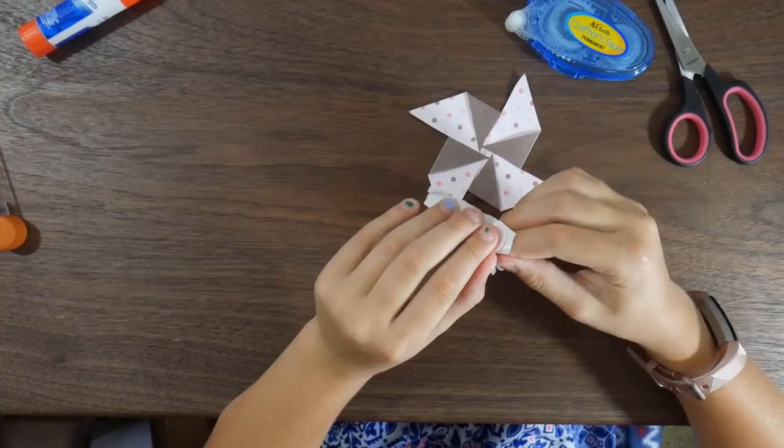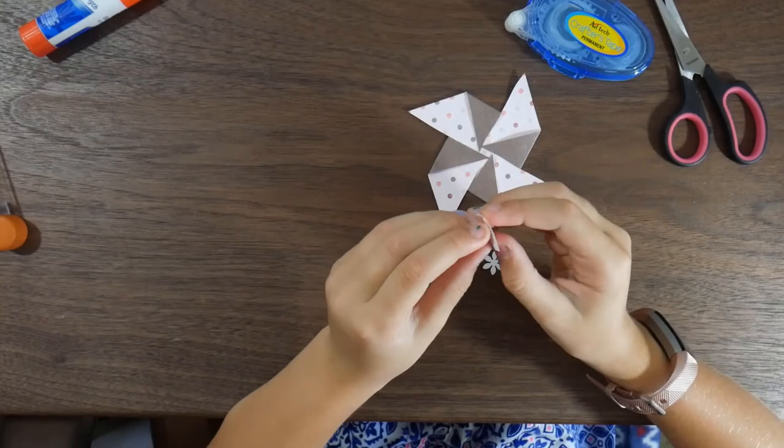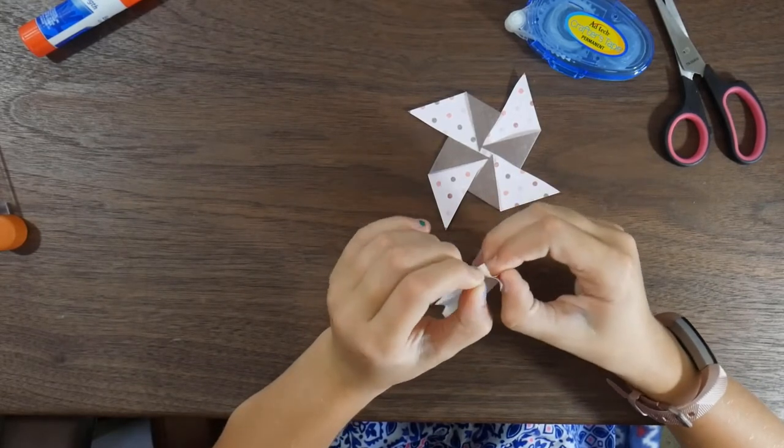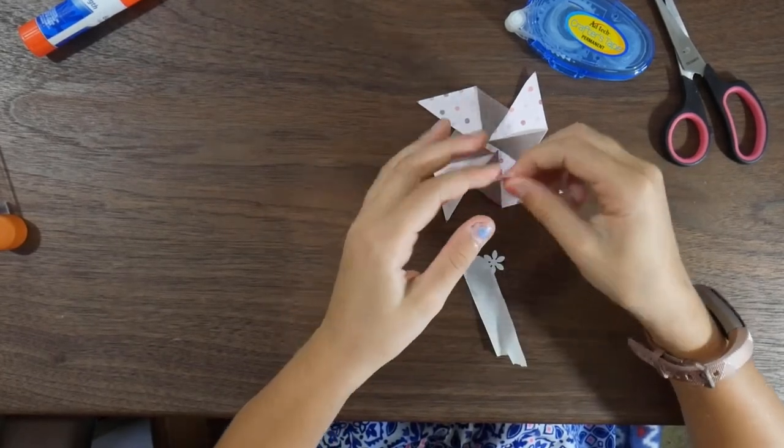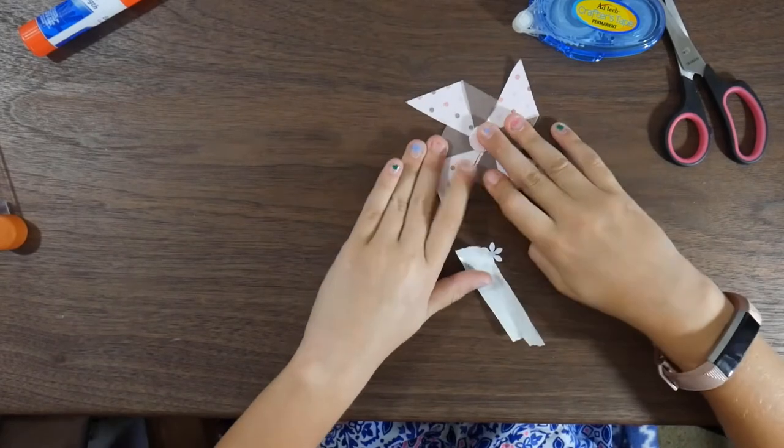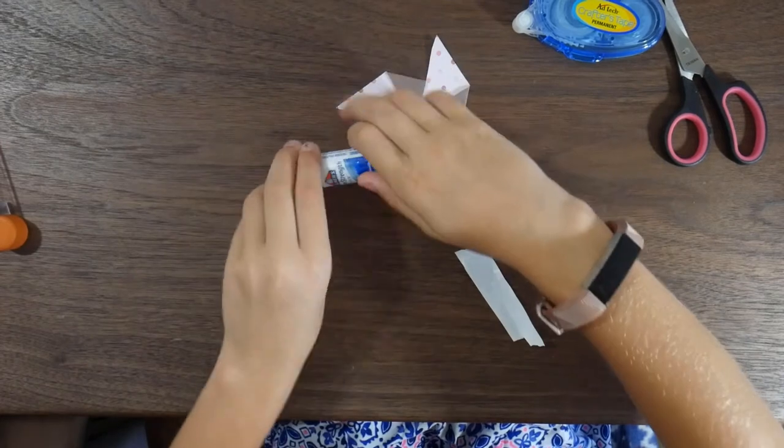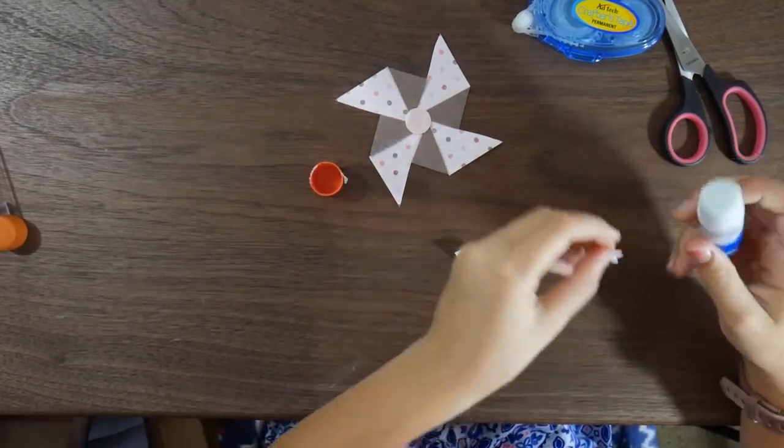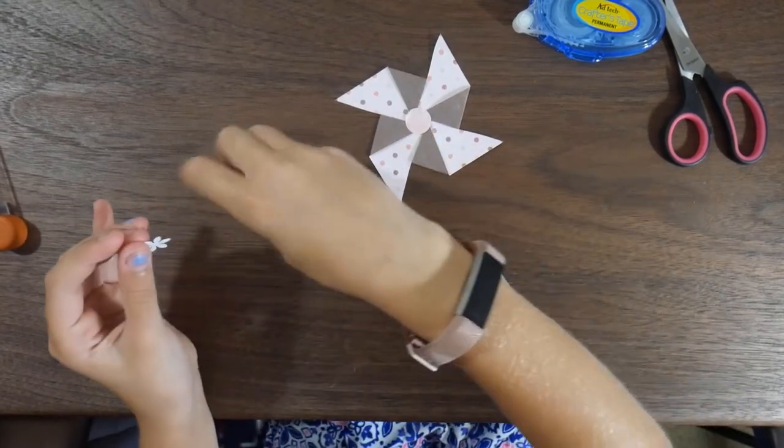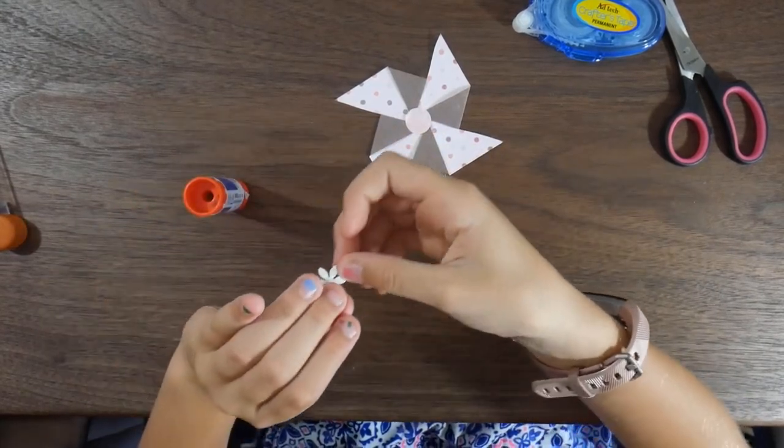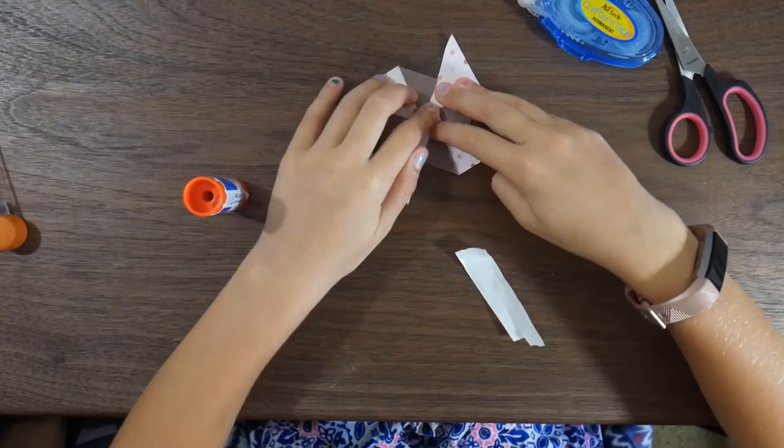So she's just doing kind of a very simple embellishment in the center. She's just got a punch circle, and it's already on a glue dot. So that will also help hold her points down there in the center. And then she's going to embellish that a little bit more with a tiny little flower punch. And that's it.